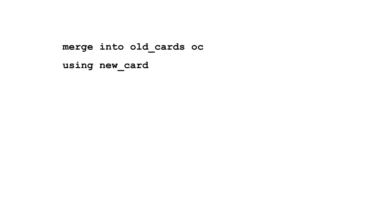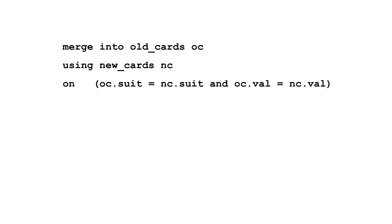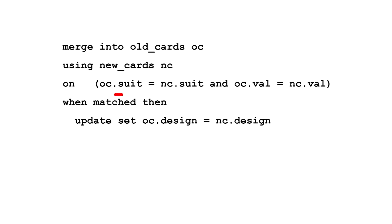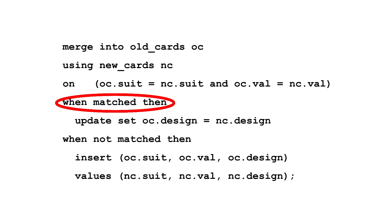The join in merge must link each row in the source to at most one row in the target, so you need to join on a unique set of attributes. For playing cards, that's the value and suit. If there is a match, you define what to overwrite in the when matched clause. And if there isn't, add new rows in the when not matched clause.